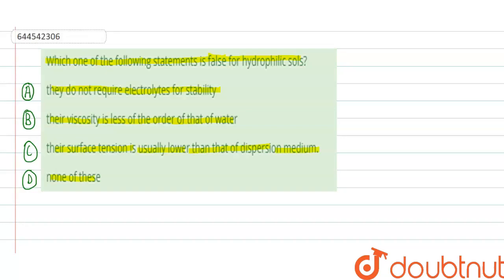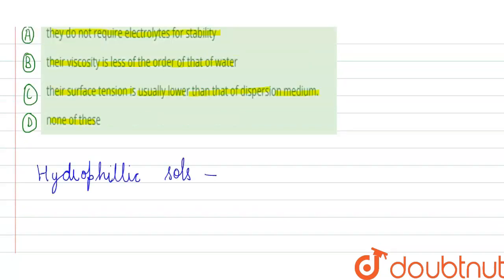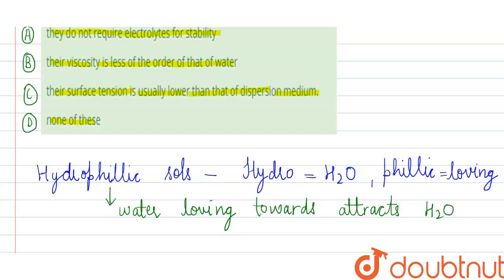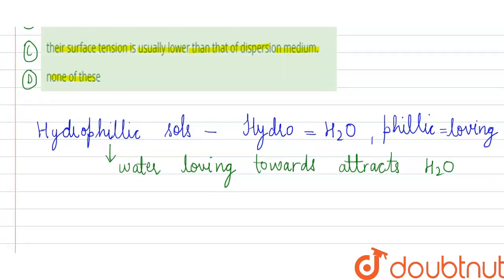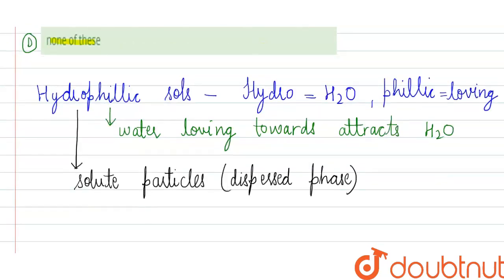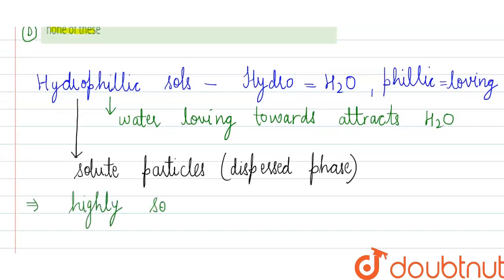So first of all, what is a hydrophilic sol? Hydro means water, and philic means loving — so our hydrophilic sol is water-loving, meaning it attracts water. Our hydrophilic sol has solute particles in the dispersed phase and has high solubility in water.